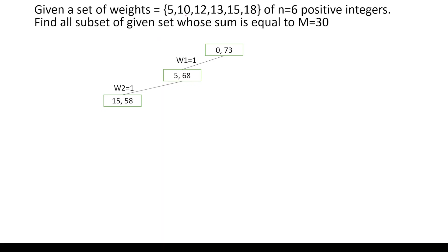When you add 10 to the already existing subset which has weight 5, the total weight becomes 15. With 5 and 10 added, the remaining weight is 12+13+15+18, which is equal to 58. We want a total weight of 30, so let us add the third element. When you add the third element, which is 12, the total weight becomes 5+10+12, which is equal to 27.